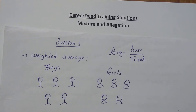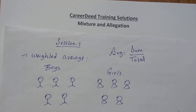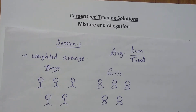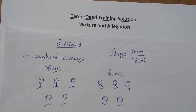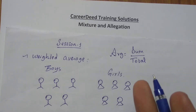Welcome to Karate Training Solutions. In this video we shall discuss what is mixture and allegation. Mixture and allegation is a rule that enables us to find the ratio in which two or more ingredients at the given price must be mixed to produce a mixture of a desired price.